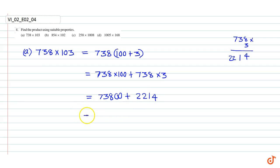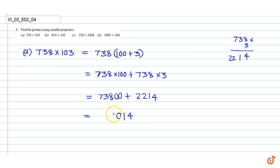This is equal to 73800 plus 2214, which equals 76014.